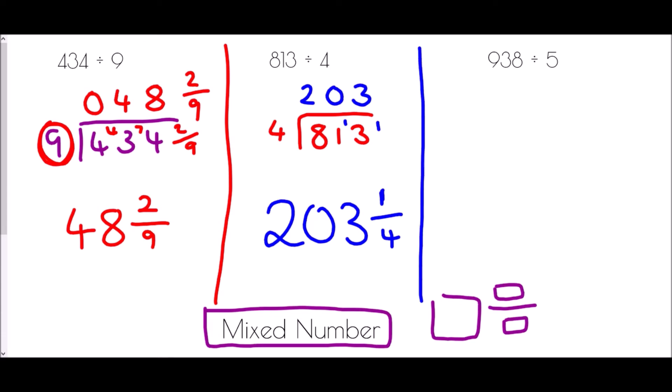And finally if I'm looking at 938 divided by 5, I'll set it up the same way. 938 divided by 5. How many times does 5 go into 9? Well it goes in once with 4 left over. How many times does 5 go into 43? Well it goes in 8 times to make 40, but that leaves me with a remainder of 3. And so I get 187 and 3 fifths. The remainder over the divisor.